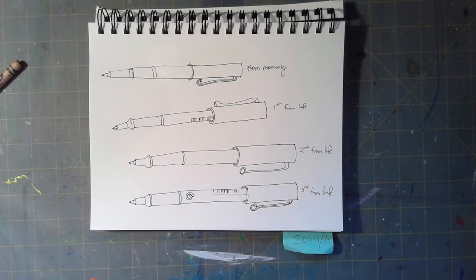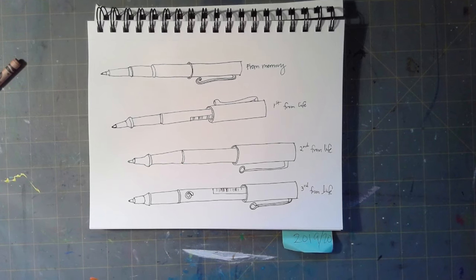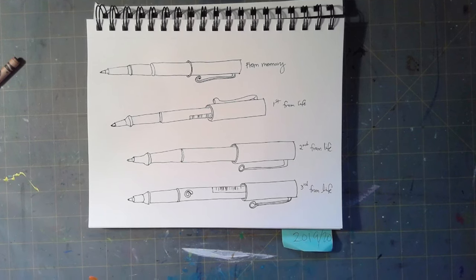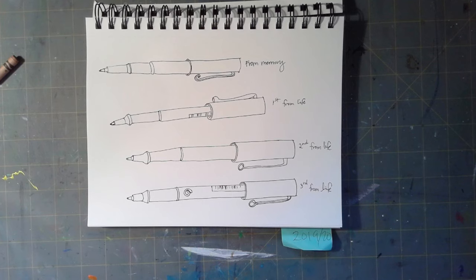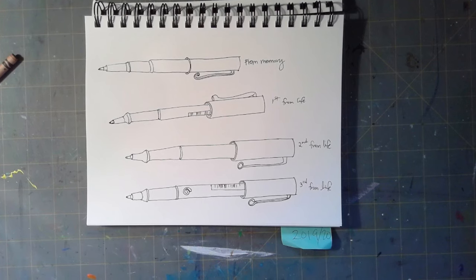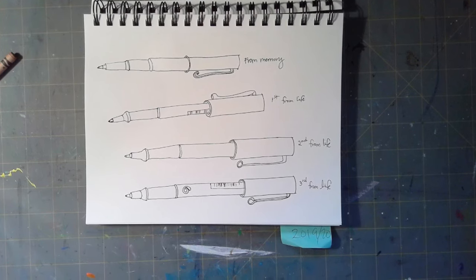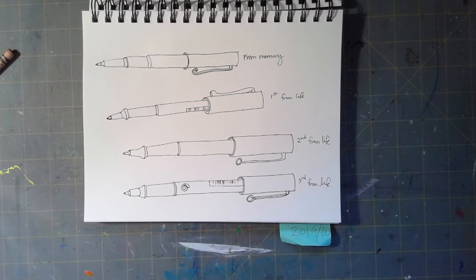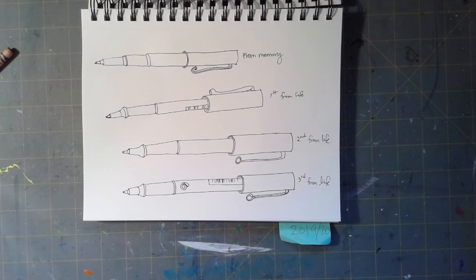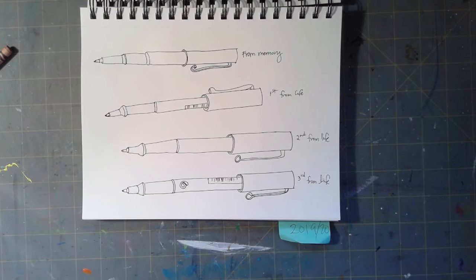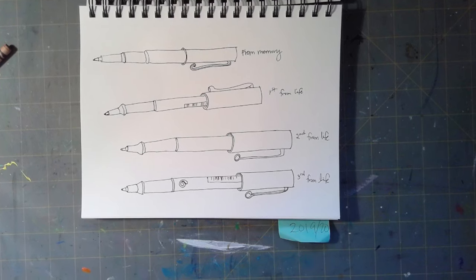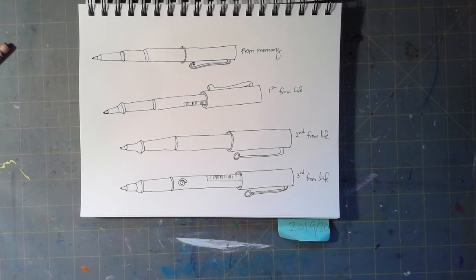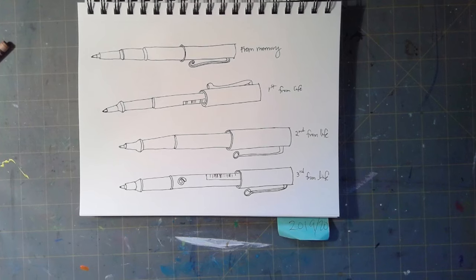Here's what we are going to do. We are going to draw the same object at least three times. So you're going to draw it the first time and you're going to really stare at the object. The second time you're going to draw it again, staring at the object. If you want to draw it from a different angle, you can do that. The third time you're going to draw it again from life looking at the object. The fourth time you draw it, you're going to put the object away and you're going to try to draw it from your memory.